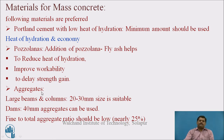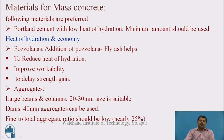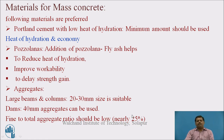Next are aggregates. In the case of large beams and columns, 20 to 30 mm size is suitable. For dams, barrages, and weirs, 40 mm aggregates can be used. One ratio suggested here is that the fine aggregate to total aggregate ratio — meaning the fine aggregate content in the total aggregate — must be near about 25 percent.